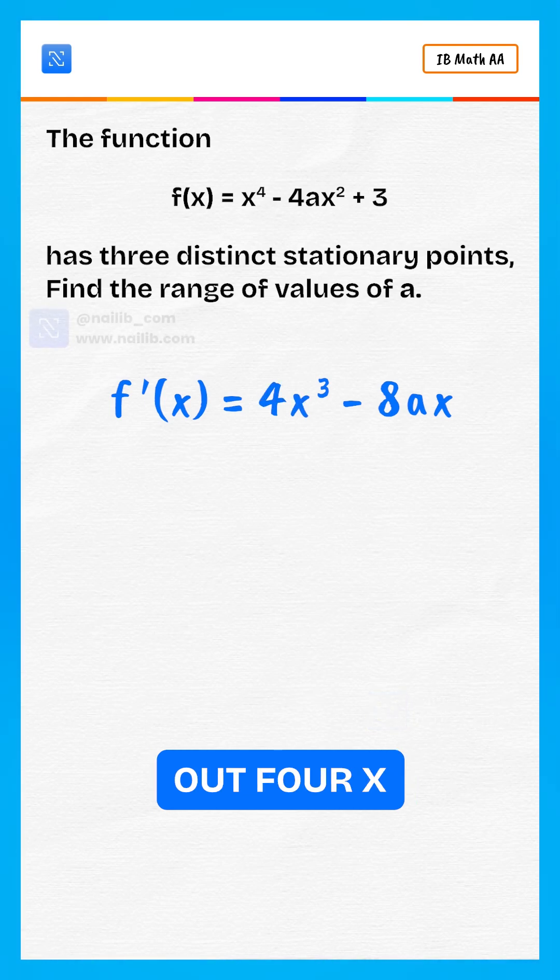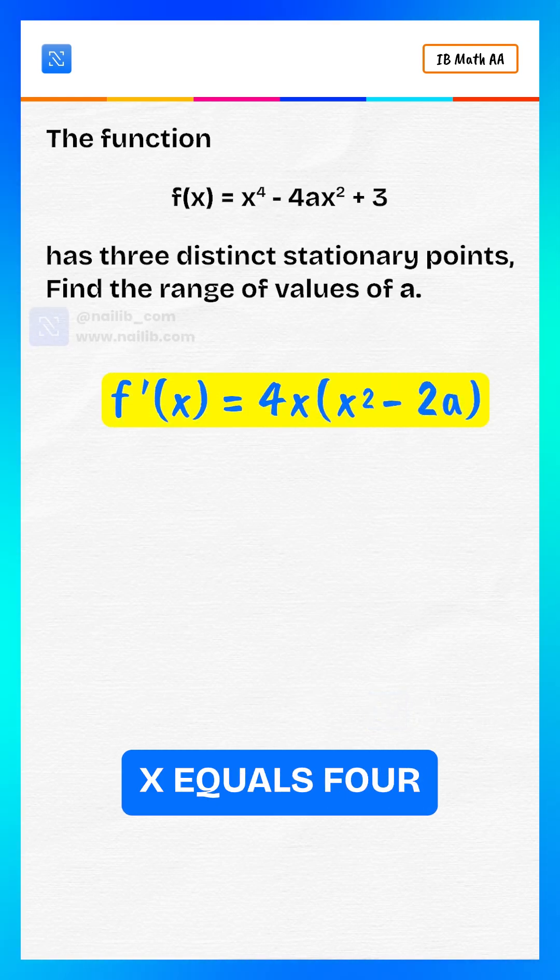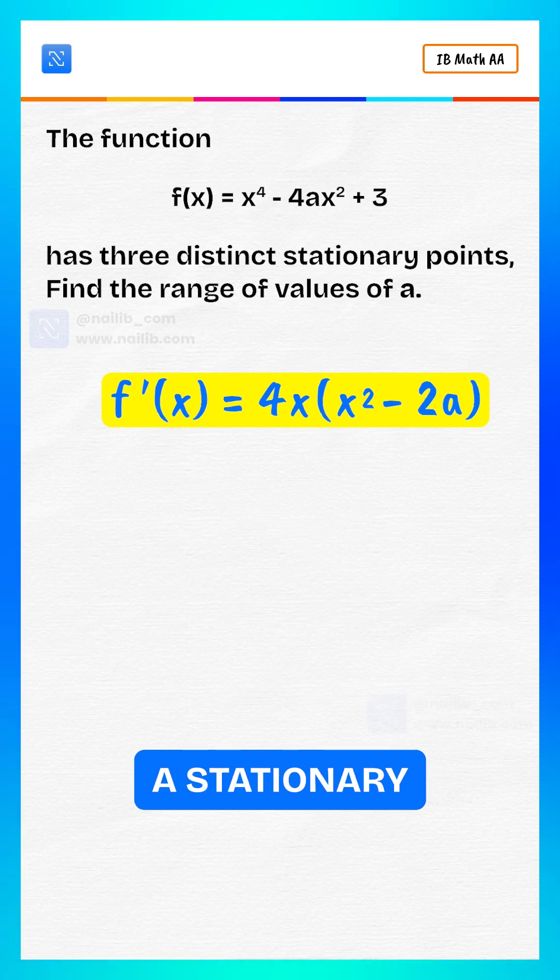Now factor out 4x. f prime of x equals 4x times x squared minus 2a.